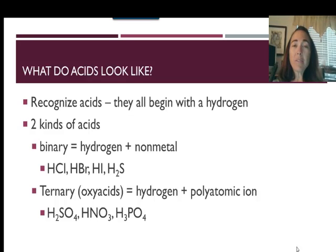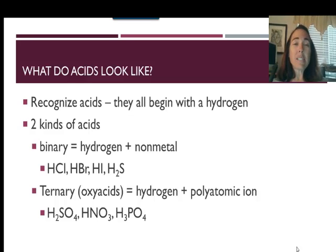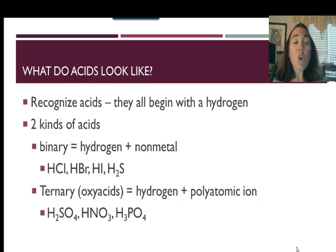Acids are compounds that generally begin with a hydrogen atom. There are two types of acids. Binary acids are the simplest ones — binary means two — so a binary acid is a hydrogen and then some non-metal, like HCl or HBr, or even H2S. Ternary acids, or oxy acids, are a hydrogen followed by a polyatomic ion. They're called oxy acids because they often involve oxygen. Examples include H2SO4, HNO3, and H3PO4. You'll recognize those ions from your reference tables.